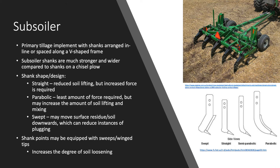The subsoiler is a primary tillage implement with shanks arranged either in line or spaced along a V-shaped frame. Shanks on a subsoiler are much stronger and wider compared to shanks on a chisel plow. There are also many different shank shapes or designs such as straight, parabolic, and swept. Straight shanks reduce the amount of soil lifting but require an increased amount of force to pull them. Parabolic shanks do not require as much force as the other shank designs but may increase the amount of soil lifting and mixing in rough conditions. Swept shanks may move surface residue and soil downwards, which can reduce instances of plugging.